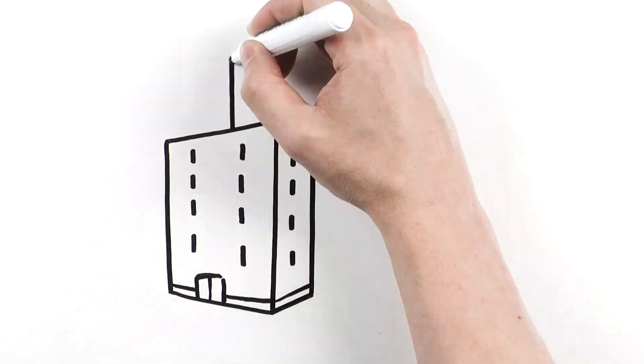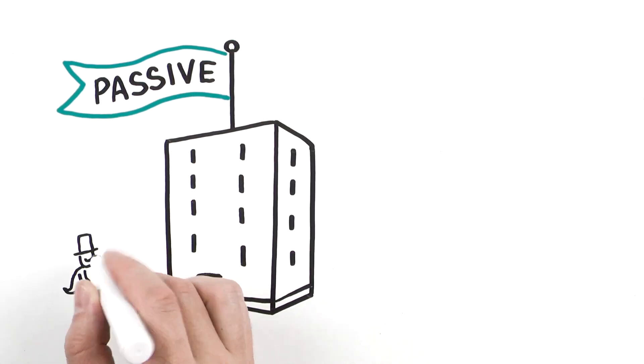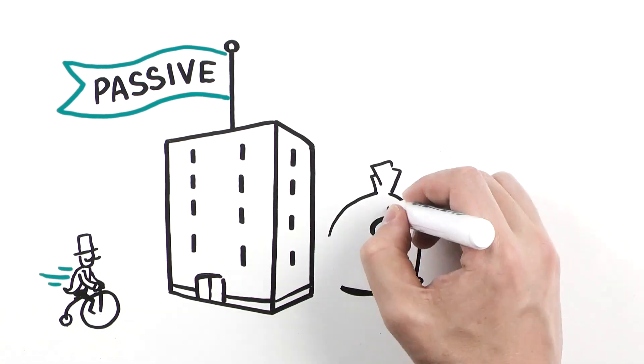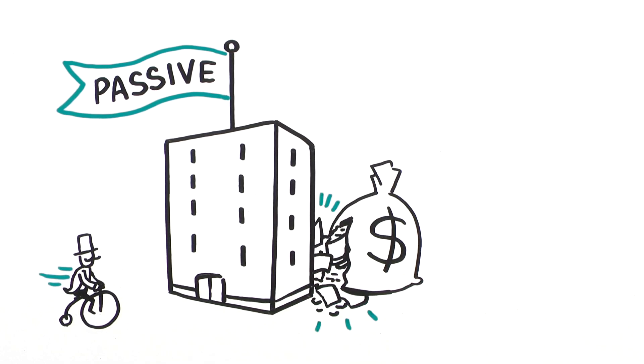Traditionally, buildings were passive and unconnected, simply a place to do business and house people and assets. Buildings were viewed as an expense, where the primary goal was to keep the building running.